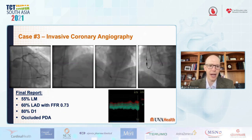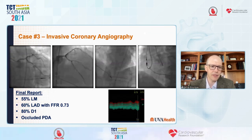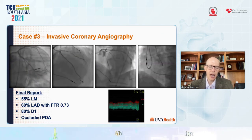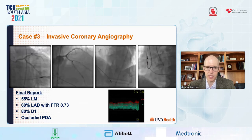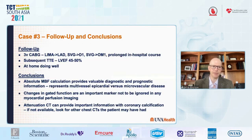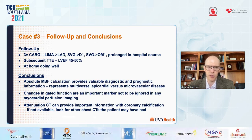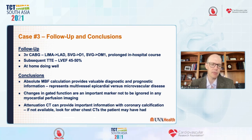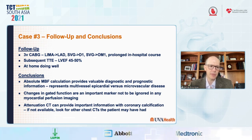He underwent coronary angiography and was found to have a 55% left main, a 60% LAD lesion with FFR of 0.73, an 80% D1 lesion, and an occluded PDA. He ultimately underwent three-vessel CABG with a LIMA to the LAD and vein grafts to the first diagonal and first OM. He had a prolonged in-hospital course but is at home doing much better, with a subsequent echo showing EF improvement to 45 to 50%.